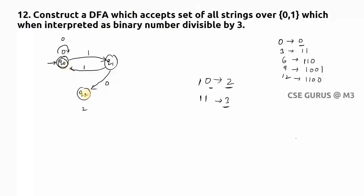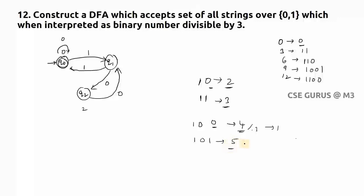For q2 transitions: you reach q2 from q1 on input 0. From q2 on input 0, the string becomes '100' in binary, which is 4 in decimal. 4 divided by 3 has remainder 1, so it goes to q1. From q2 on input 1, the string becomes '101', which is 5 in decimal. 5 divided by 3 has remainder 2, so q2 goes to itself — a self-loop.